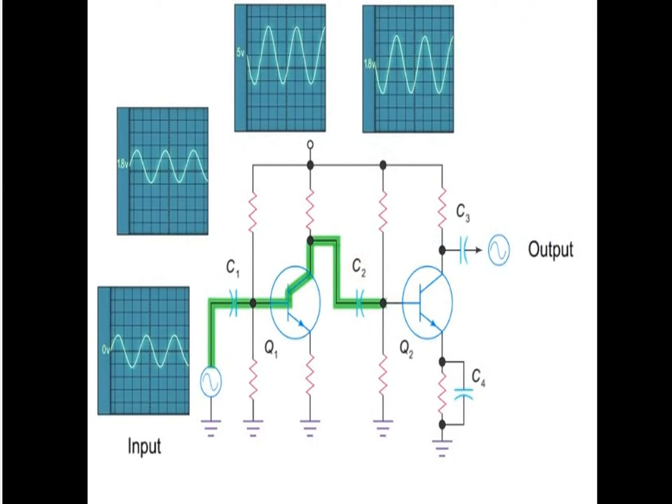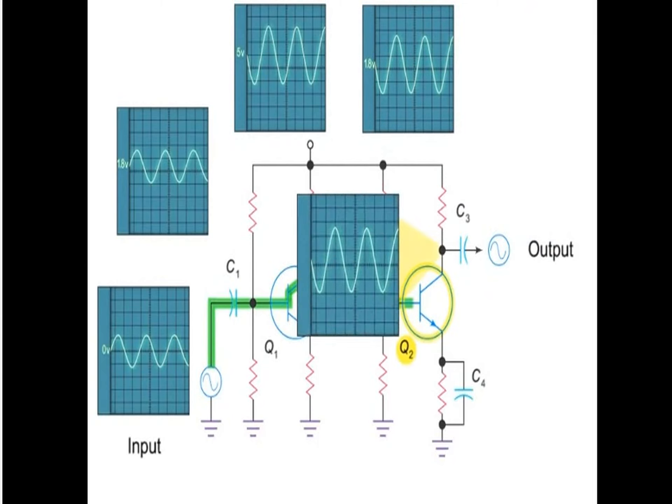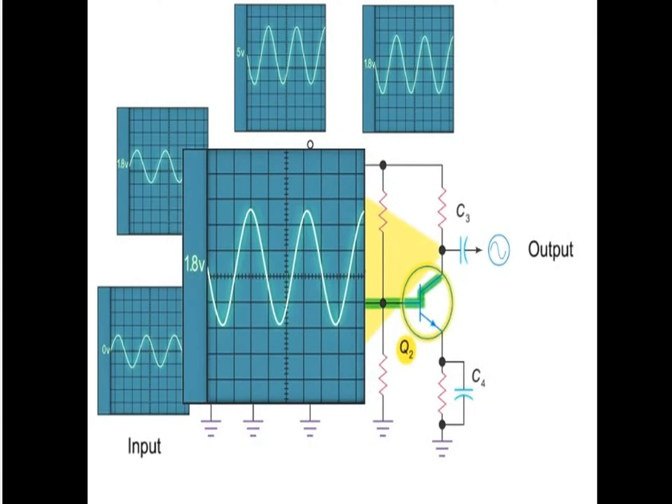Passing through the second transistor, Q2, yields an AC signal that is increased again but is also back in phase with the original input signal.